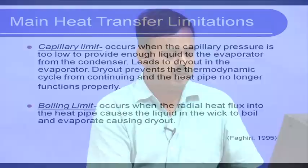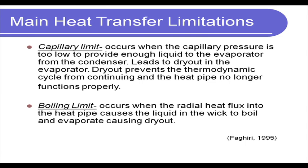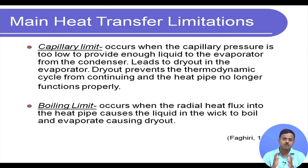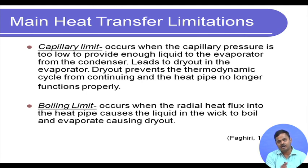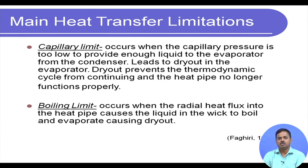Now let us go over the operating limits of a heat pipe. The first is the capillary limit: when the capillary pressure is too low to provide enough liquid from the condenser to the evaporator, leading to dry-out of the evaporator. If the capillary pumping head is insufficient and liquid cannot return to the evaporator while heat is being supplied, the liquid will vaporize and not come back, causing complete dry-out.